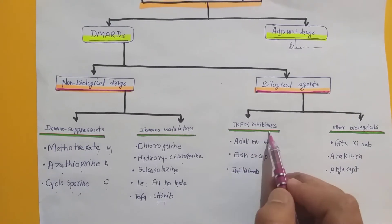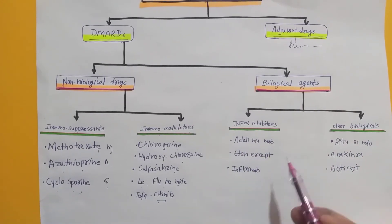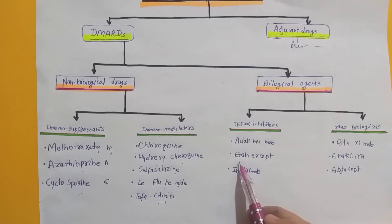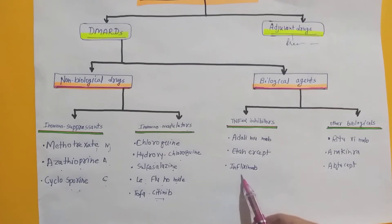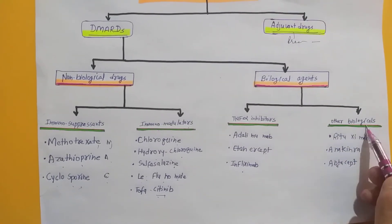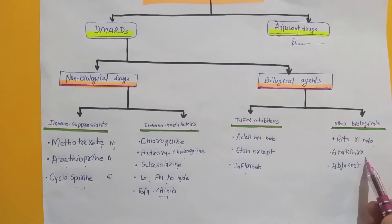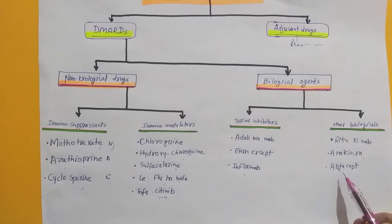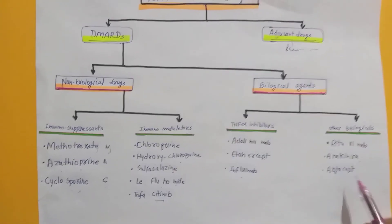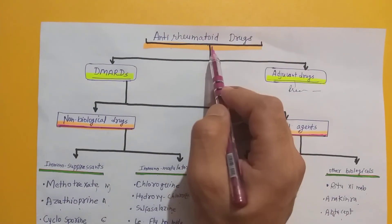Under TNF-alpha inhibitors: adalimumab, etanercept, and infliximab. Other biological agents include rituximab, anakinra, and abatacept. These are the anti-rheumatoid drugs.